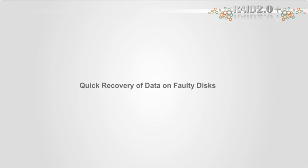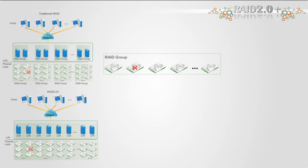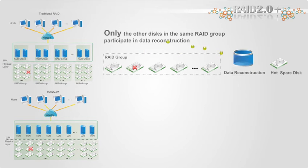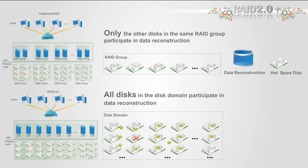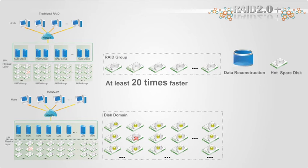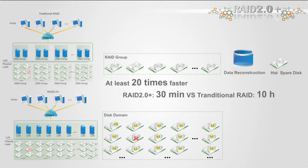Quick recovery of data on faulty disks. When a disk fails in a traditional RAID environment, only the other disks in the same RAID group participate in reconstructing the faulty disk's data onto a hot spare disk. After replacing the faulty disk, the storage system still needs to copy the data back from the hot spare disk to the newly inserted disk. This copy-back process is very time consuming, making data recovery speed in a traditional RAID environment quite slow. However, in a Huawei RAID 2.0 Plus environment, when a disk fails, all disks in the disk domain participate in reconstructing the faulty disk's data. Compared with traditional RAID, Huawei RAID 2.0 Plus is at least 20 times faster in recovering faulty disk data. Specifically, it takes only 30 minutes to reconstruct 1TB of data, whereas traditional RAID needs at least 10 hours. Fast data recovery enables users to use disks of 4TB or larger in the storage system.